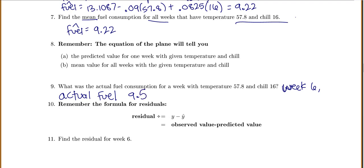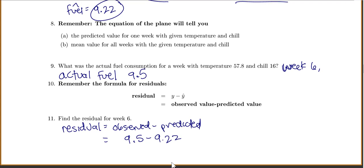Now remember our formula for our residuals. Our residual is just our observed value minus predicted value or y minus y hat. So let's find the residual for week six. So my residual equals my observed minus predicted. So my actual or my observed is 9.5. The predicted one we got up here was 9.22. So this gives me 0.27 or 0.28.